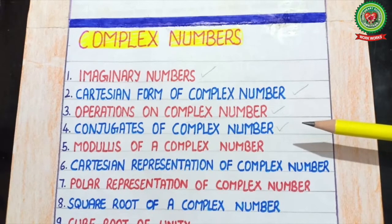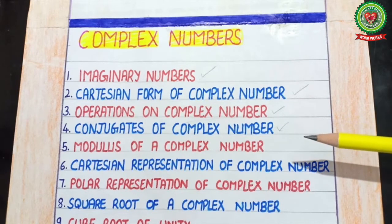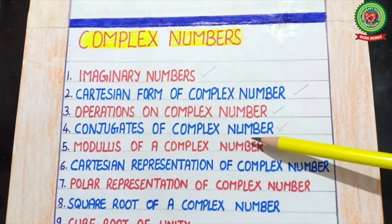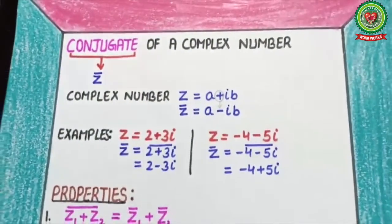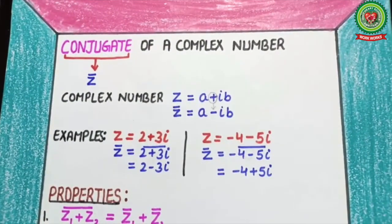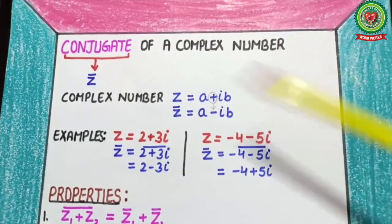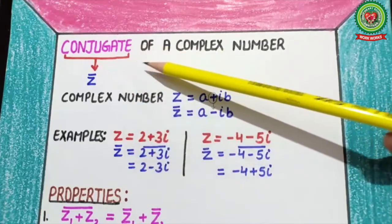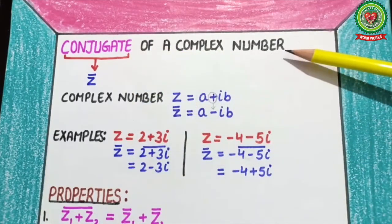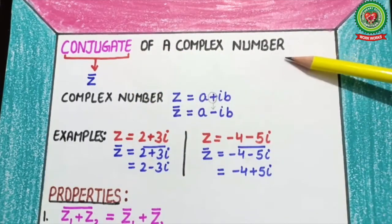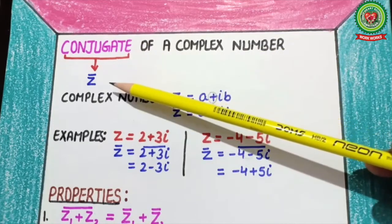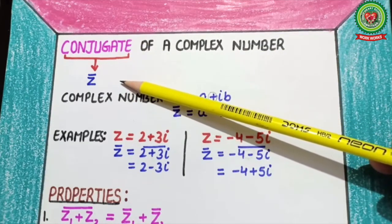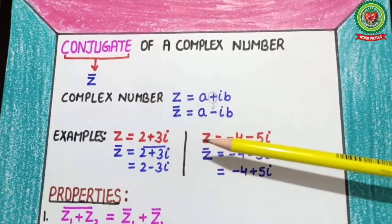Today, we are going to discuss conjugates of a complex number. In conjugate of a complex number, first of all, conjugate is denoted by z-bar. Let's see how to solve this.